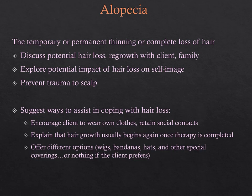Alopecia is the temporary or permanent thinning or complete loss of hair. Before someone receives chemotherapy or radiation, discuss the potential for hair loss and regrowth with the client and family. Explore the impact on their self-image, prevent trauma to the scalp by encouraging head cloths, help them retain social contacts, and explain that hair growth usually begins again once therapy is completed.